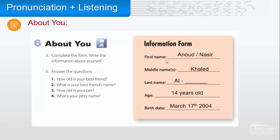Section B: answer the questions. 1. How old is your best friend? 2. What is your best friend's name? 3. How old is your pet? And 4. What's your pet's name? Answer these about yourself. For example, for number one you can write 'He or she is 14 years old.' For number two, the name of your friend, for example Nora or Salih. For number three, how old is your pet — if you have a cat, rabbit, or parrot — for example 'It is 5 years old.' And the last question: what is the name of your pet? Write the name.